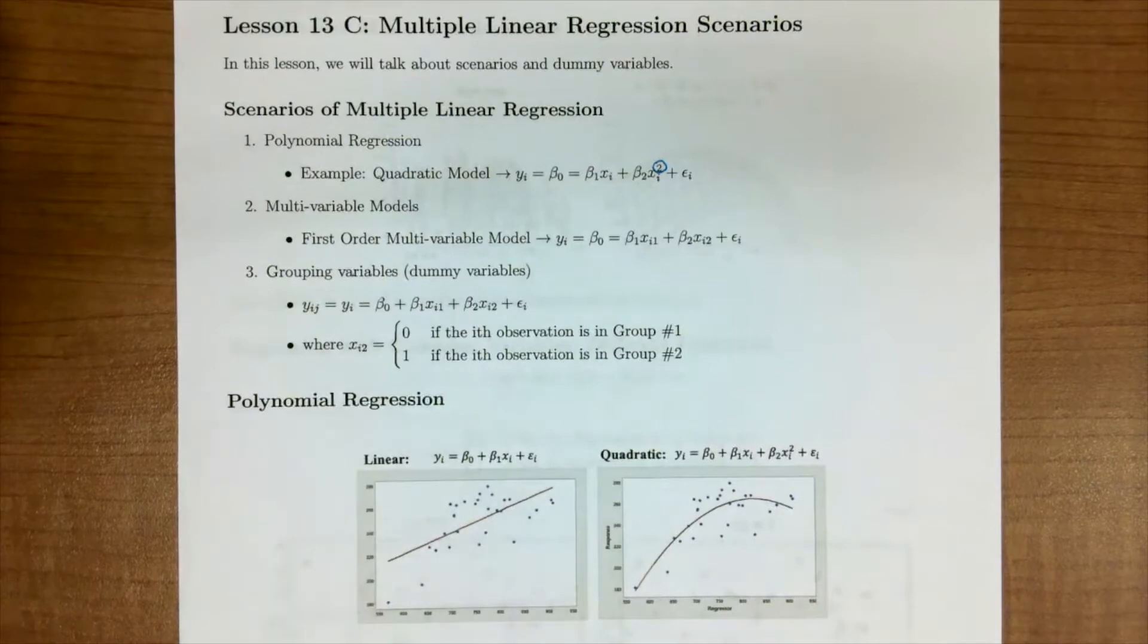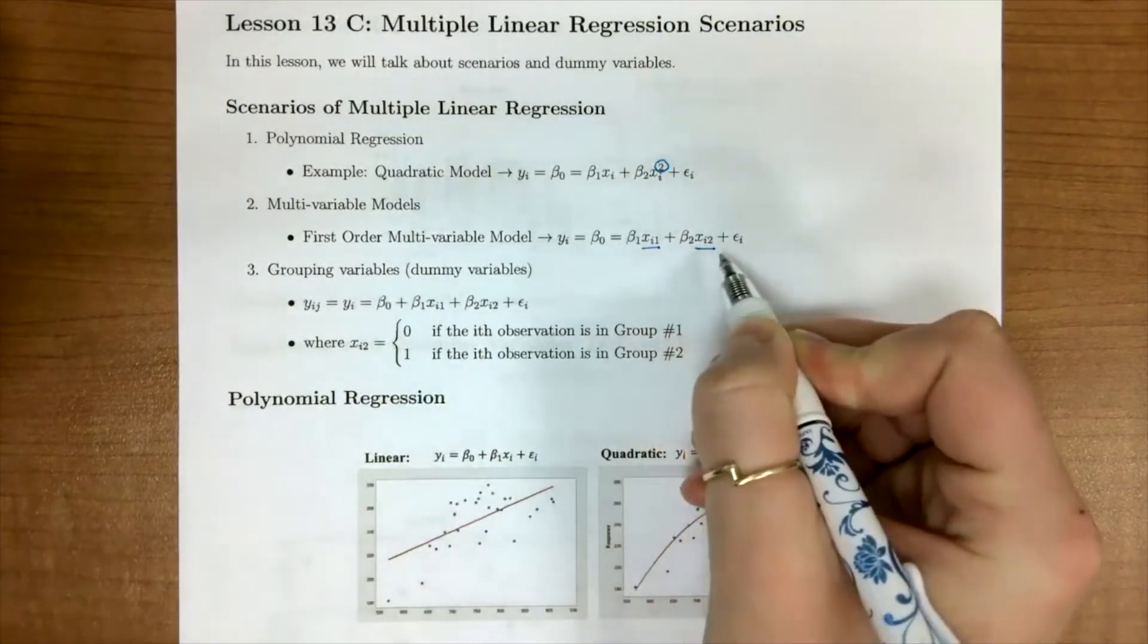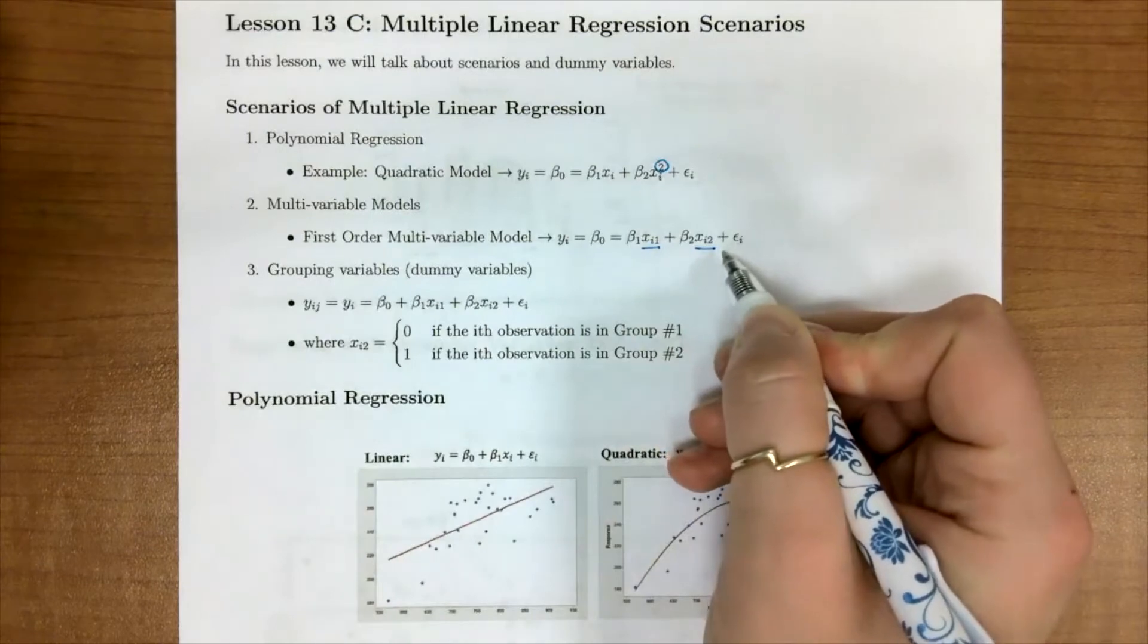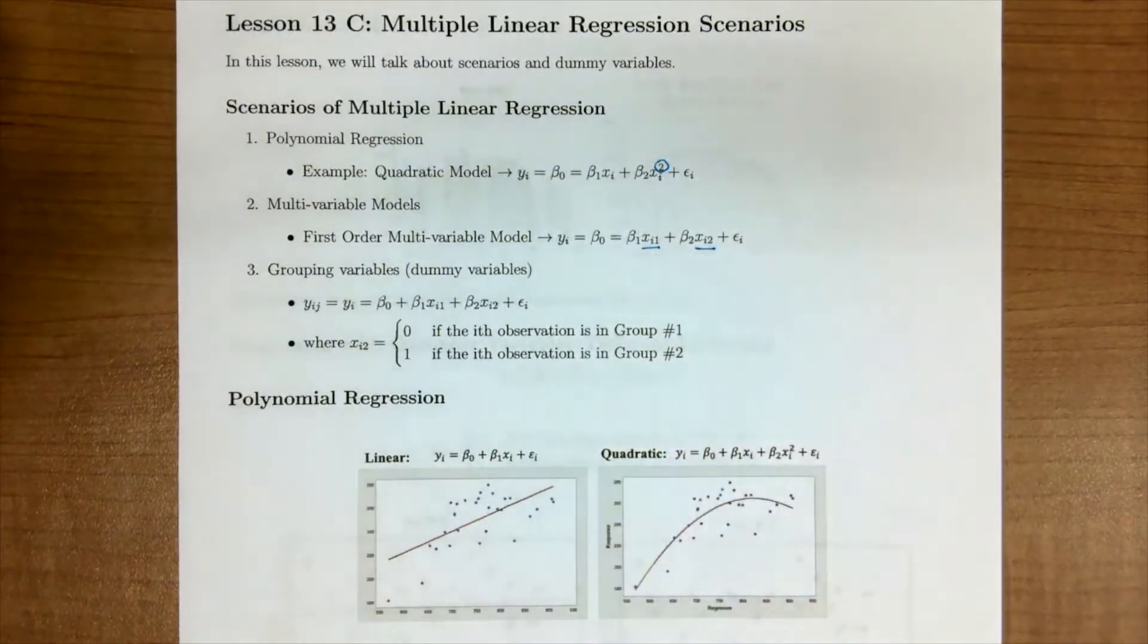We can also have scenarios with multiple variable models. So here is variable one, variable two. This is very common and similar to our fish catch example that we saw in our previous lessons.